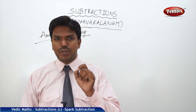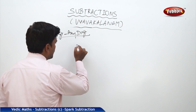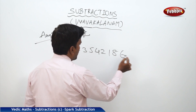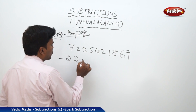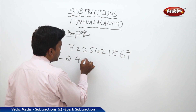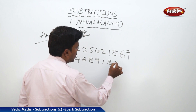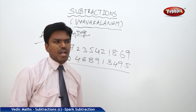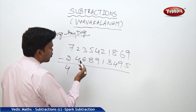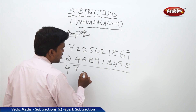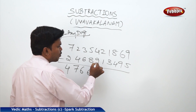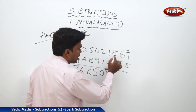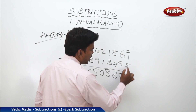Take a number randomly: 7, 2, 3, 5, 4, 2, 1, 8, 6, 9 minus 2, 4, 6, 8, 9, 1, 3, 4, 9, 5. I want to do this subtraction from left to right. Ready: 7 minus 2 — 5, but 4. Then 2 plus 6 — 8, but 7. Then 3 plus 4 — 7, but 6. Then 5 plus 2 — 7, but 6. Then 4 plus 1 — 5, but 5 only. Then 2 minus 1 — 1, but 0. Then 1 plus 7 — 8, but 8 only. Then 8 minus 4 — 4, but 3. Then 6 plus 1 — 7, but 7 only. Then 9 minus 5 — 4. That's it, that is your answer.